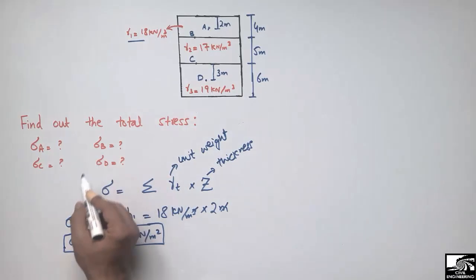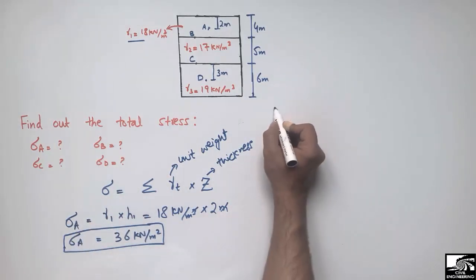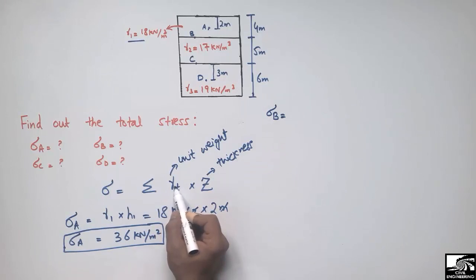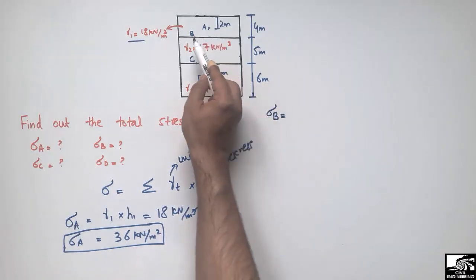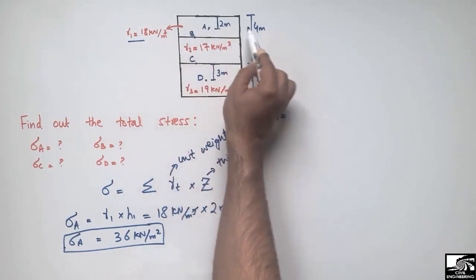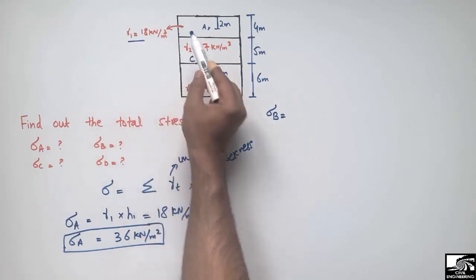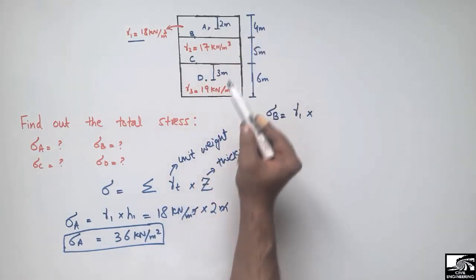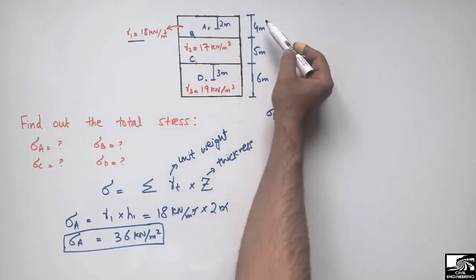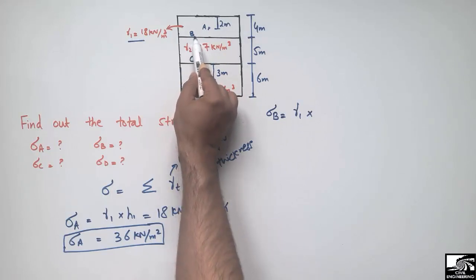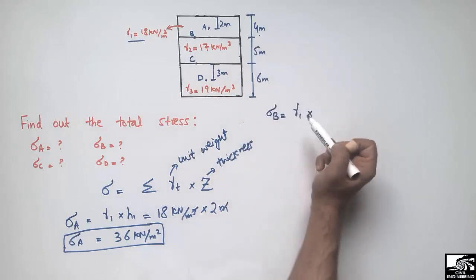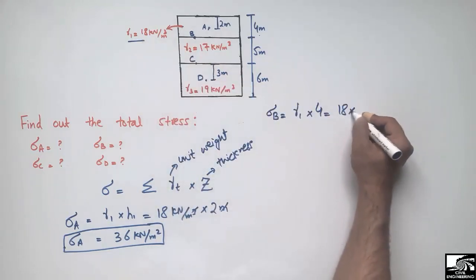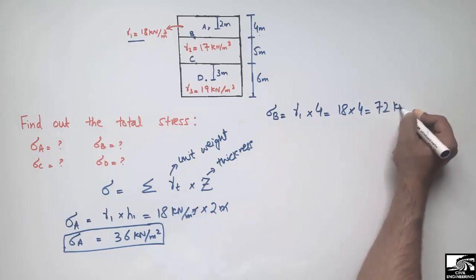Now for the stress at point B — it is also straightforward. The stress at point B equals gamma₁ multiplied by h, where the unit weight is again 18 kN/m³ and the depth z is 4 meters, since point B is at the bottom of the first layer. So 18 multiplied by 4 gives us 72 kN/m².